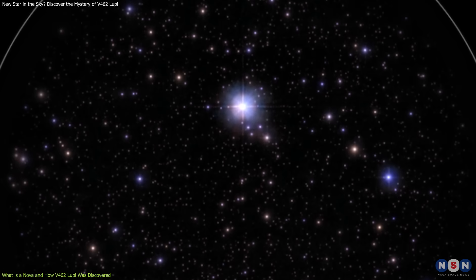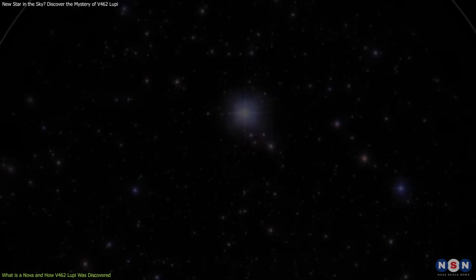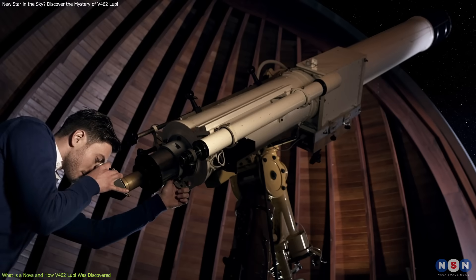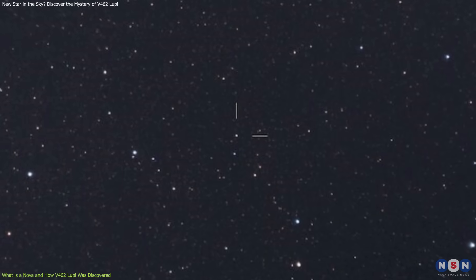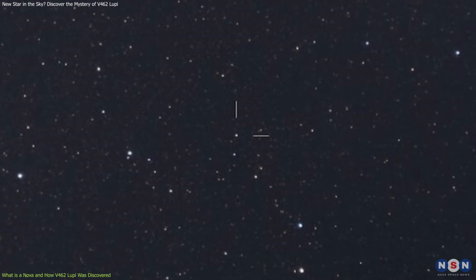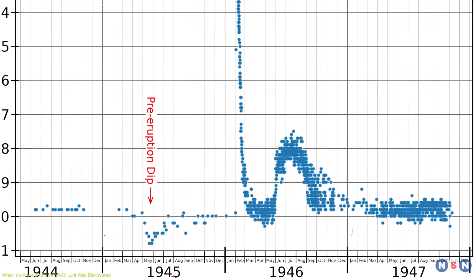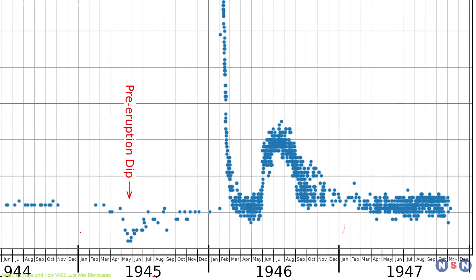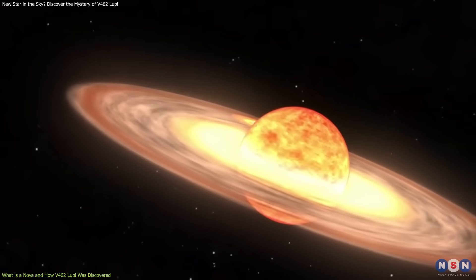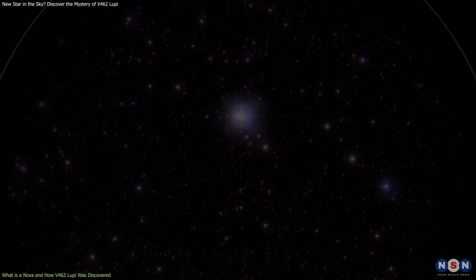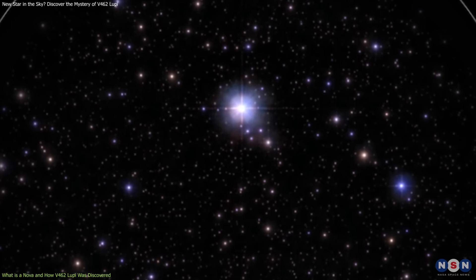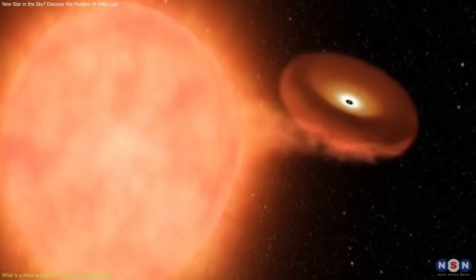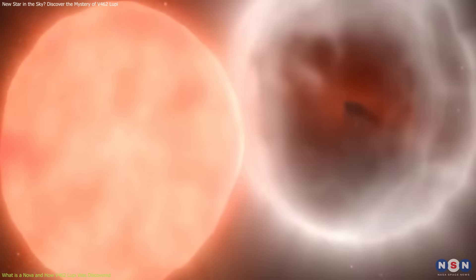This rapid brightening of V462 Lupe caught the attention of both astronomers and sky watchers. The discovery of V462 Lupe was especially notable because it wasn't anticipated. Astronomers had been tracking T. Coronae Borealis, a known recurring nova which was expected to explode at any time. Instead, V462 Lupe surprised the scientific community by its sudden brightness, highlighting the unpredictable nature of such stellar events.